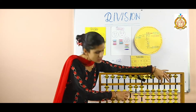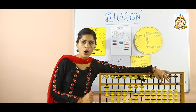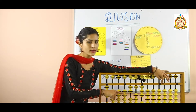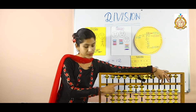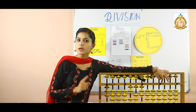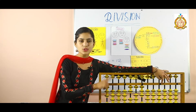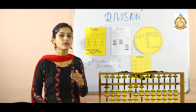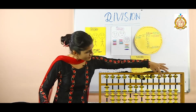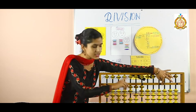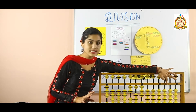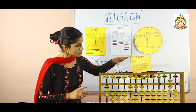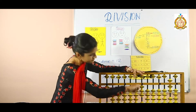Divisor is 3. First digit is 2, but 2 is less than 3. So take the next digit — next is 1, so together 21. 21 divided by 3 is 7. 7 is a single-digit number; we need 2 digits, so keep 0 in front. Place finger on the third rod: add 0 (no bead), then move to the second rod and add 7 — 7 is a butterfly number, add together. Now multiply quotient by divisor: 7 into 3 is 21. Deduct 21 from the dividend. 21 is deducted.